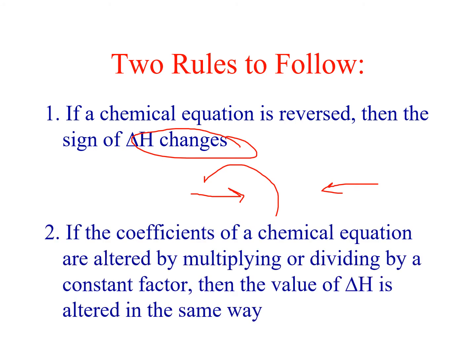And two, if the coefficients of a chemical equation are altered by multiplying or dividing by a constant factor, then the values of delta H is also altered. So if you have an equation, you need to double the things in it, whatever they happen to be, then you would also double whatever the given delta H value is. We're going to use both of these ideas to go ahead and solve this one.